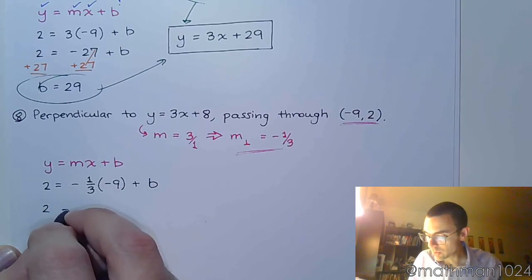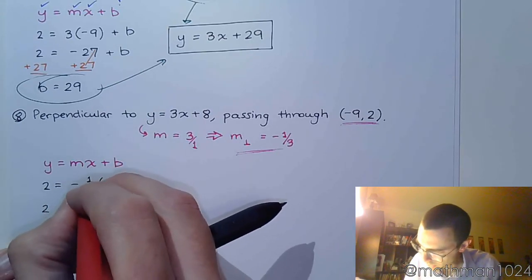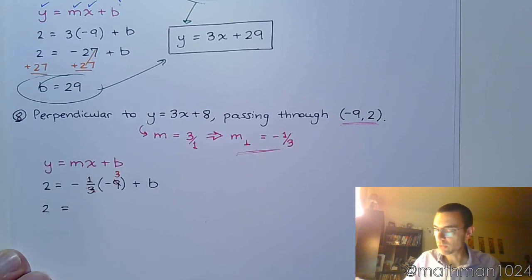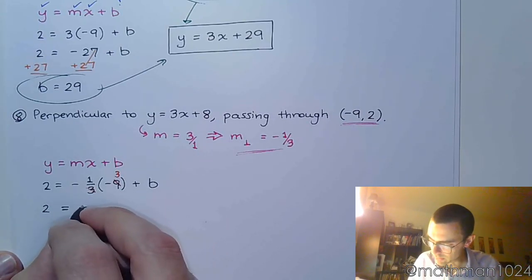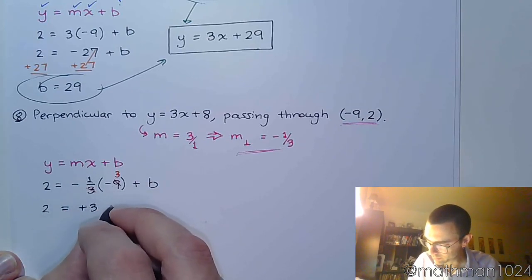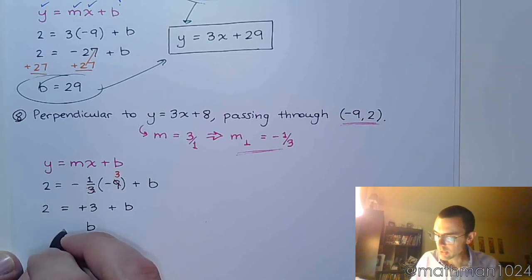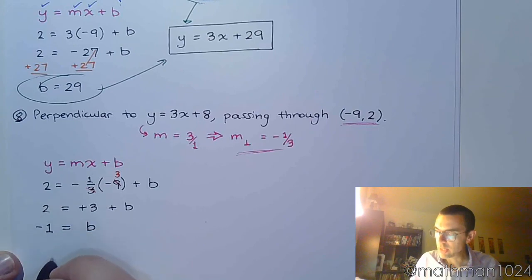Alright, so this is 2 equals. Now notice what happens here. This 3, this denominator, can reduce with the 9. And it goes in there 3 times. So now we don't have a fraction to worry about. But you do have to pay attention to your signs. Negative times negative is positive. And that's just 1 times 3, so that's 3. And when we get b by itself, we subtract 3 on both sides, and we end up with negative 1.